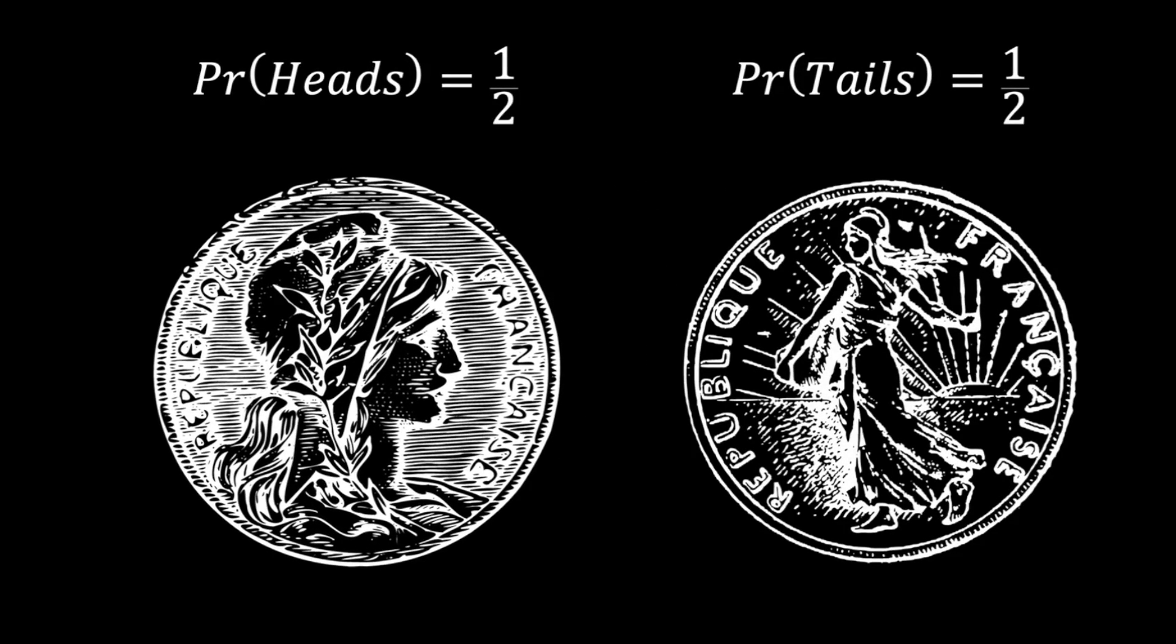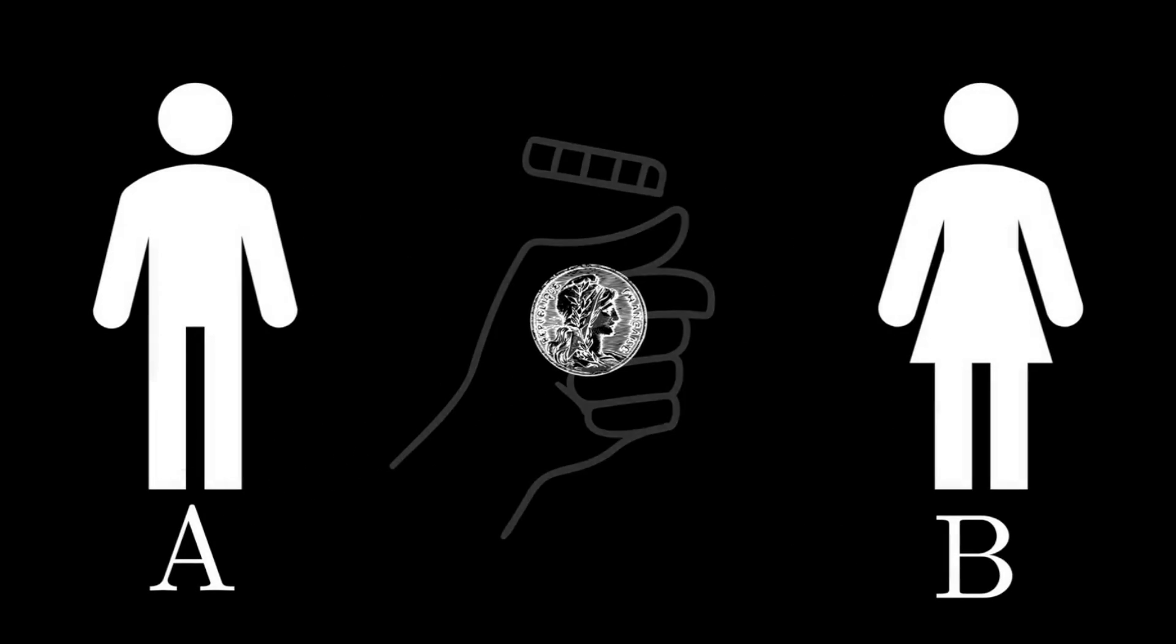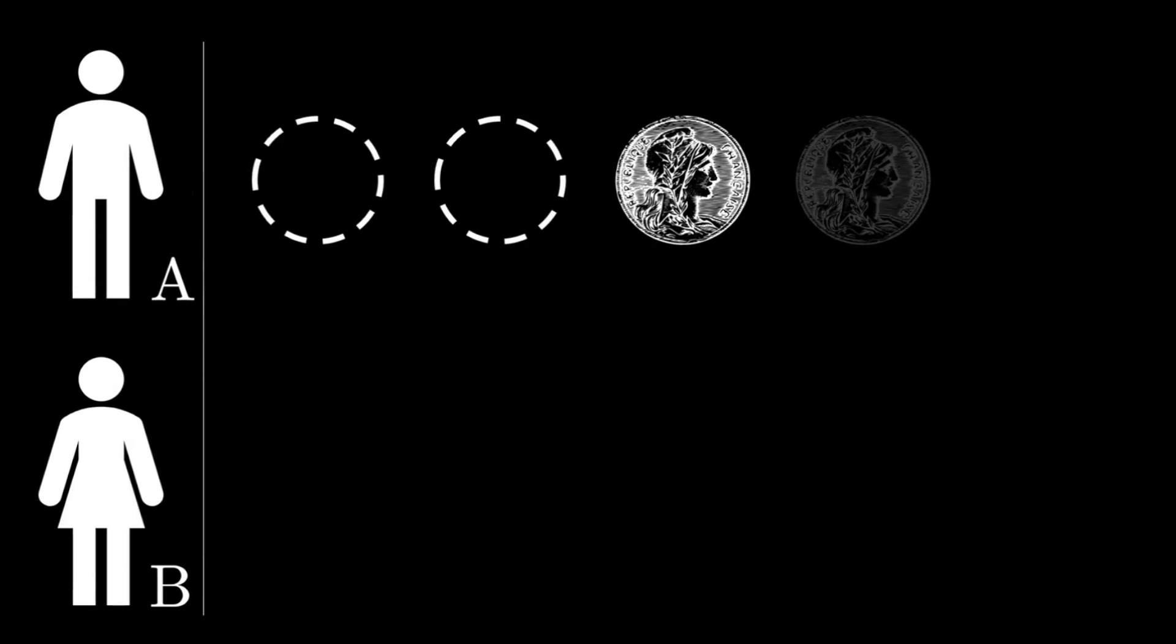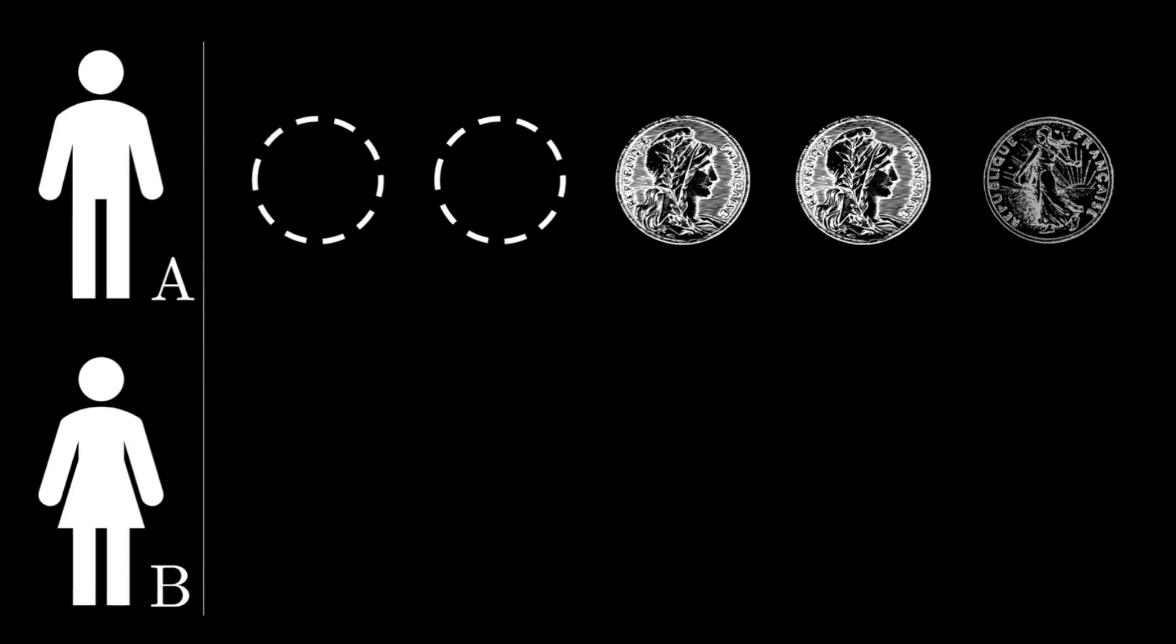A fair coin is tossed continuously between two people, A and B. If any consecutive sequence of three flips results in hits, hits, tails in this order, A wins the game.